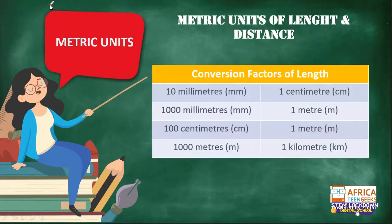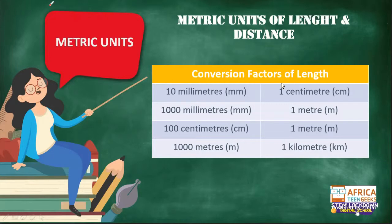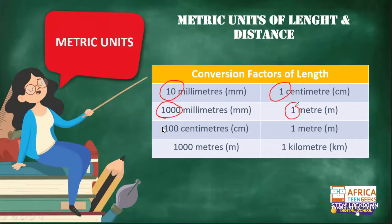Here I have a table for you guys to look at. When we talk about metric units of length and distance, these are the conversion factors of length. We can see that 10 millimeters gives us a centimeter. And over here, we've got 1,000 millimeters in one meter, 100 centimeters in one meter, and 1,000 meters in one kilometer.